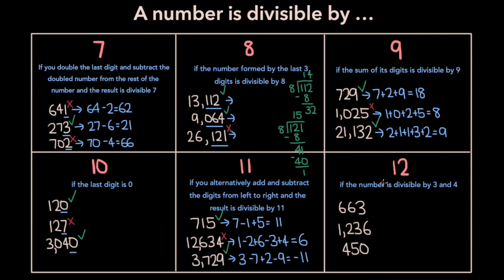To check if a number is divisible by 12, you check if the number is divisible by both 3 and 4. A number is divisible by 3 if the sum of its digits is divisible by 3, and divisible by 4 if the number formed by its last two digits is divisible by 4. So let's take a look at 663. Summing its digits: 6 plus 6 plus 3 equals 15. 15 is divisible by 3 — 15 divided by 3 is 5 — so 663 is divisible by 3. Now to check if it's divisible by 4, we look at the last two digits. Is 63 divisible by 4? It's not, which means 663 isn't divisible by 12.